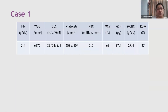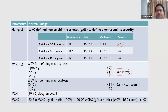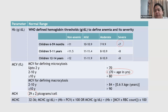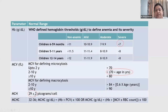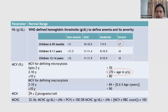For MCV, anything less than 80 is suspicious for microcytic anemia. For a child aged two to ten years, the formula is 70 plus age in years — so for this four-year-old the cutoff is 74, and his MCV of 68 suggests microcytosis. The MCH of 17.1 is low against a reference of about 30. The MCHC is also low against a normal of 32–36, indicating hypochromia.